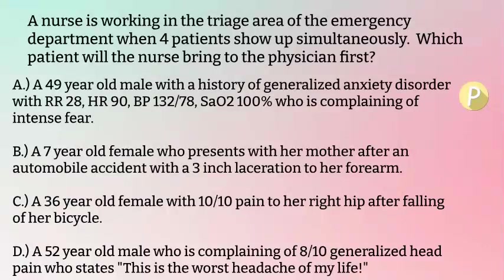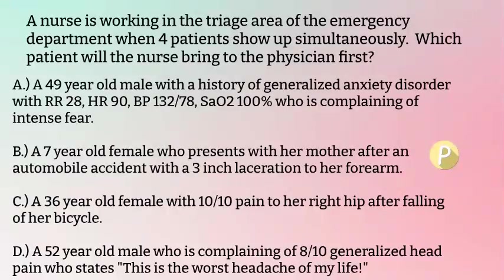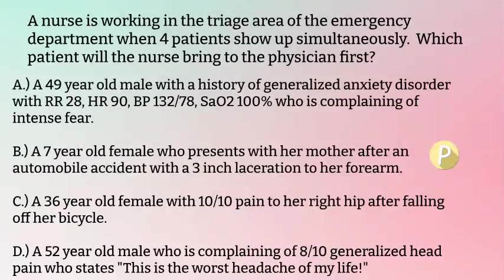Option B: a seven-year-old female who presents with her mother after an automobile accident with a three-inch laceration to her forearm. This is a bleeding question, and bleeding questions always fall under circulation — a physiologic option. So it beats out our psych option and becomes our priority. Option C: a 36-year-old female with ten out of ten pain to her right hip after falling off of her bicycle. But is this pain related to loss of limb or loss of life? No — it's expected pain after an injury. So B, our circulation option, remains our priority.